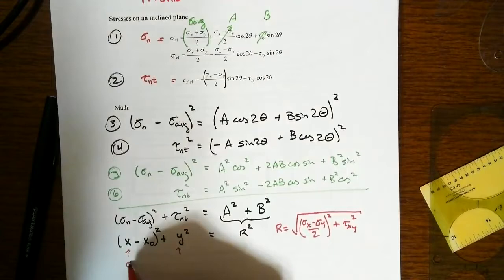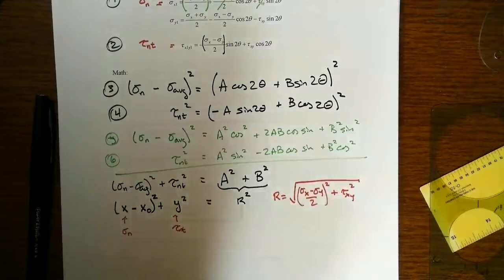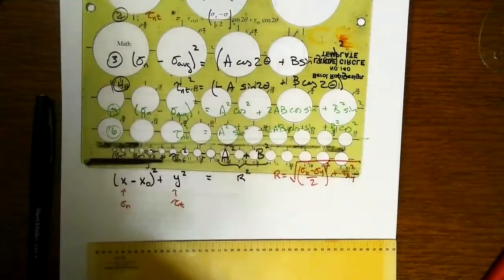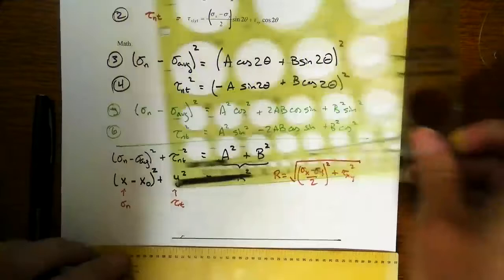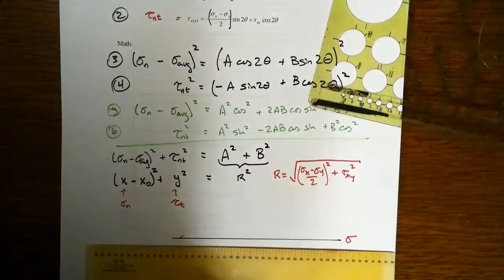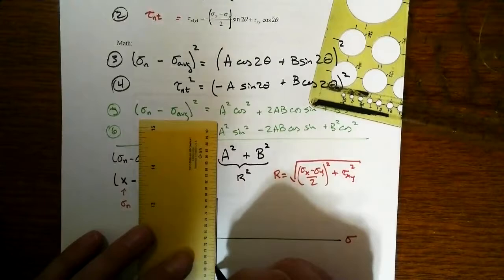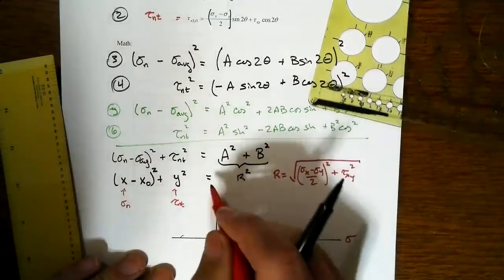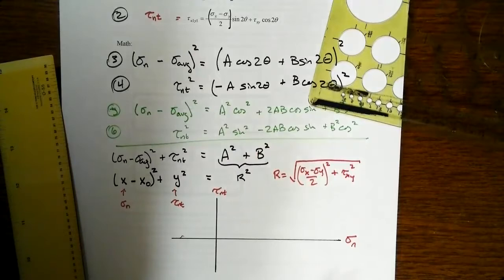So the variables are those two quantities, and that's the sigma N, and that's the tau NT. And that tells us that for any particular situation, the combination of the shear stress and the normal stress on any arbitrary plane can be thought of in terms of a series of axes, where we've got the normal stress on the horizontal axis and the shear stress on the other. That's the X and the Y's.